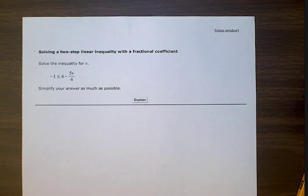Solving a two-step linear inequality with a fractional coefficient. Solve the inequality for v: negative one is less than or equal to four subtract five v divided by four. Simplify your answer as much as possible.